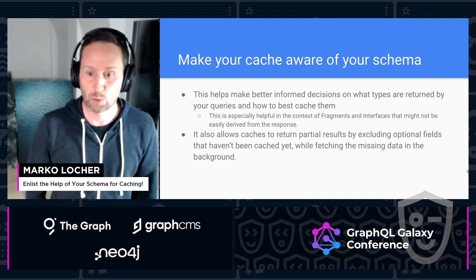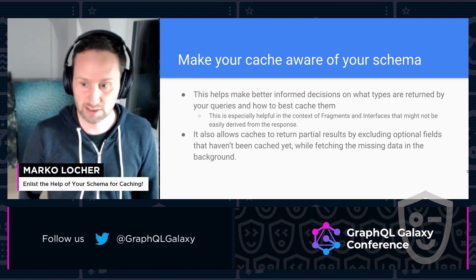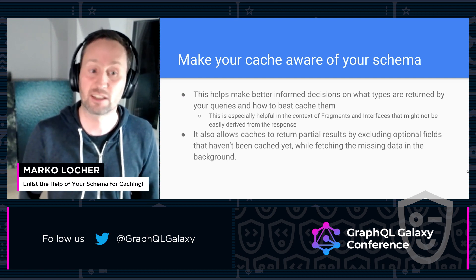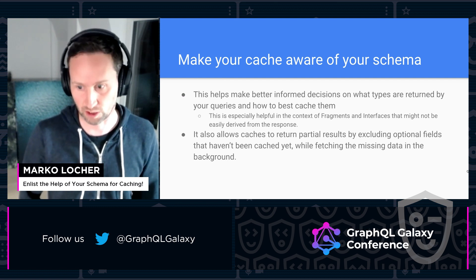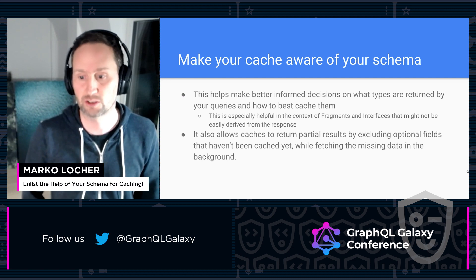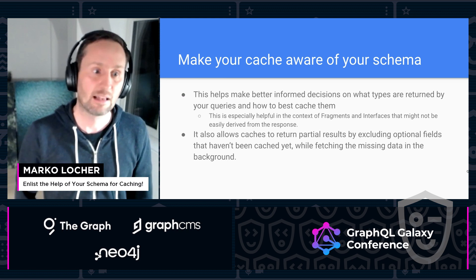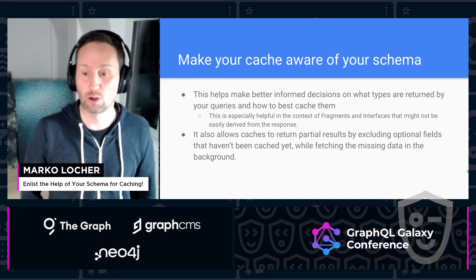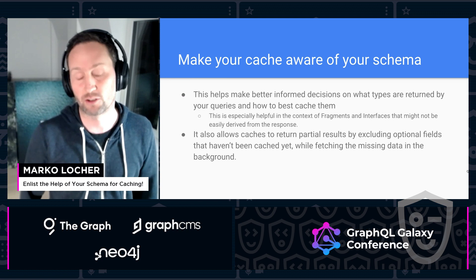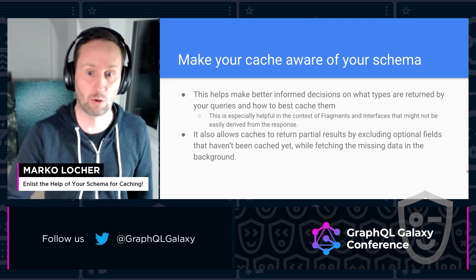Having your cache aware of your schema will also allow it to return partial results based on already cached data, if the missing fields are designated as optional — and while your app is already displaying some information to the user, the cache fetches the missing fields in the background. Without that knowledge, that would have been a query returned by your API directly and the cache would not have been involved at all.